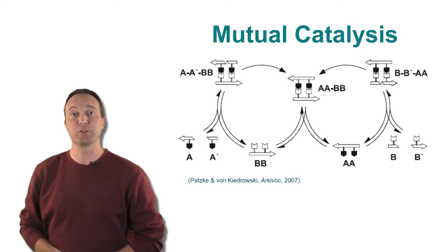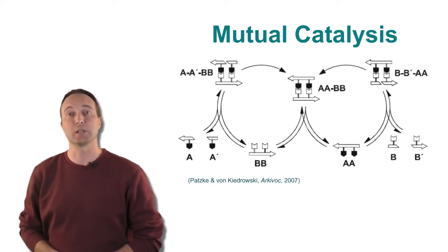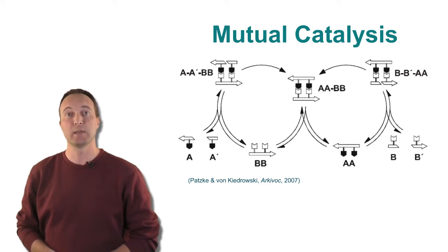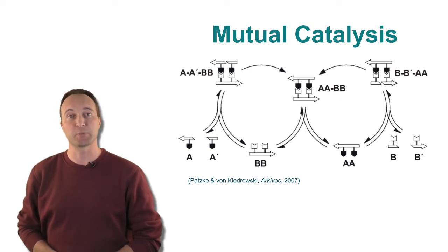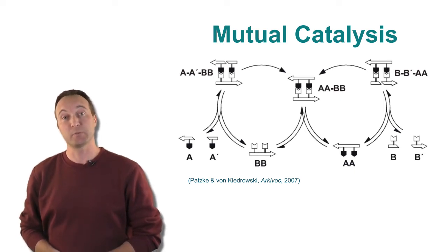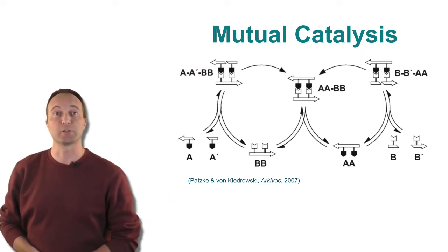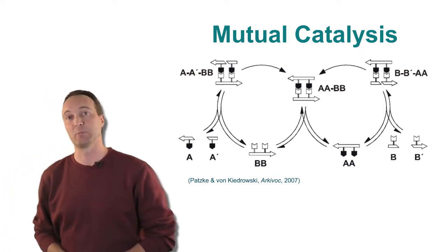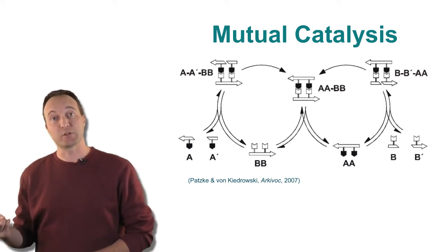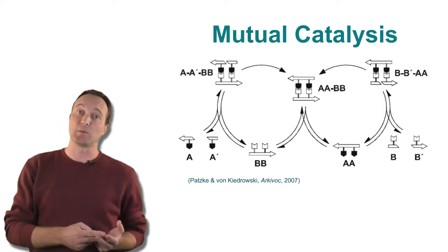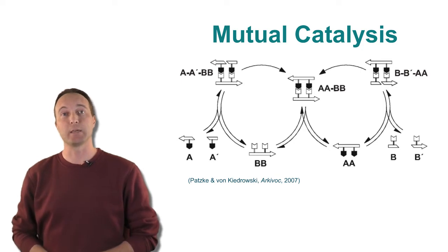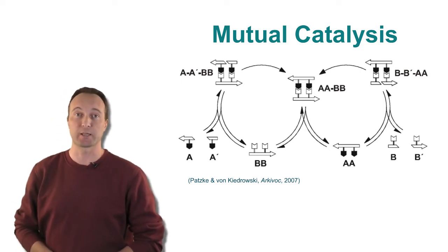The first example of such a mutually catalytic network was constructed in the lab of Gunter von Kiedrowski in Germany. It consists of a cross-catalytic pair of short nucleotide sequences. The basic building blocks are trimers A and B that form each other's base pair complement. The hexamers AA and BB now serve as templates to which the complementary trimers can attach by forming base pair bonds. For example, two B trimers can attach to an AA template.